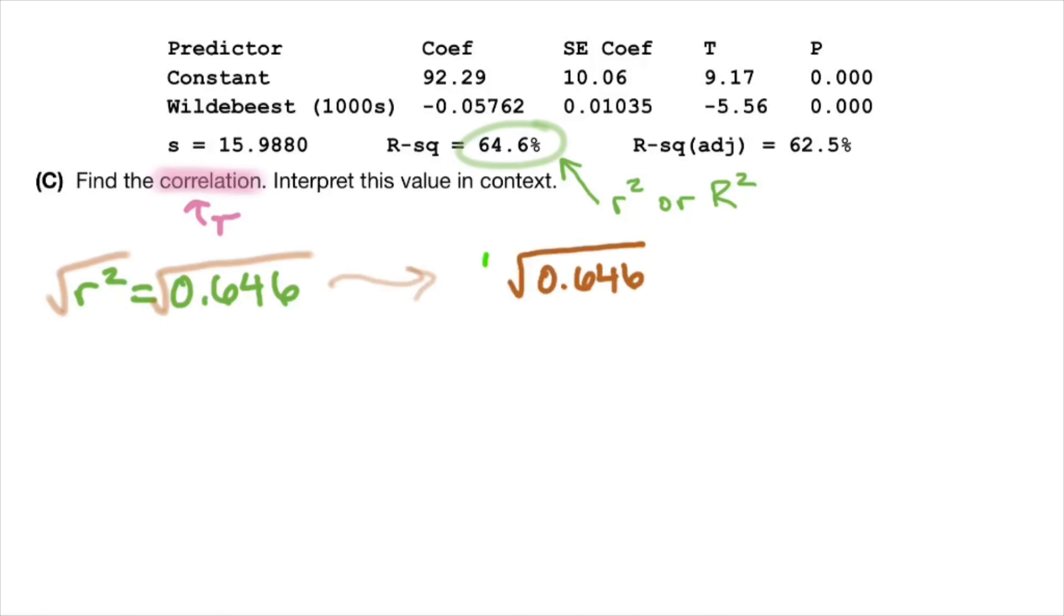But R can't be both positive and negative at the same time. That doesn't work. R either communicates that the linear relationship is positive, or R communicates that the linear relationship is negative. It can't be both positive and negative at the same time. So how do we know which one it is?